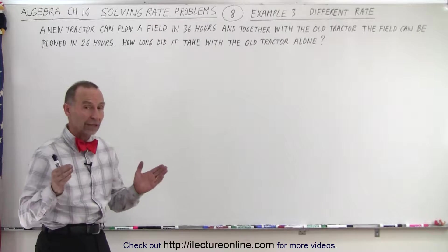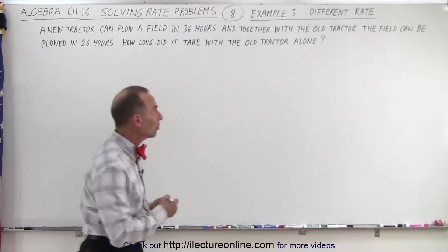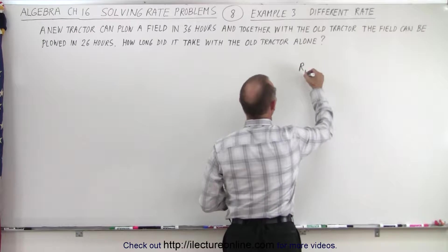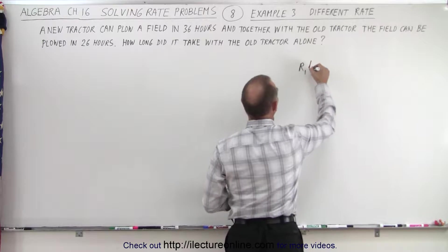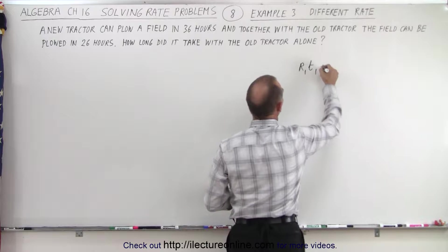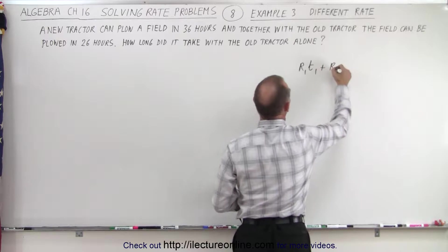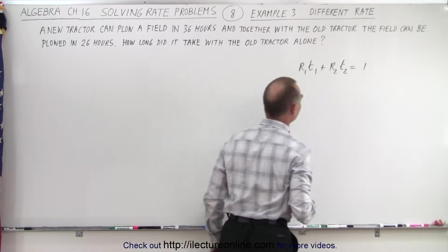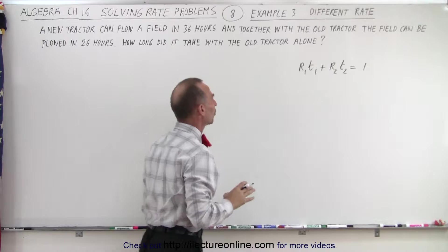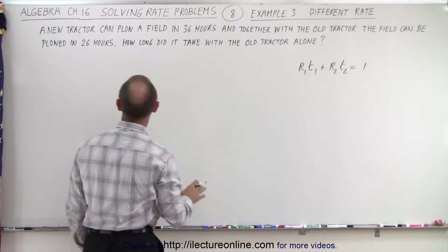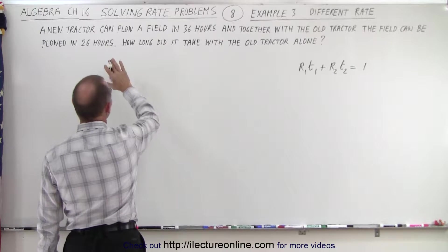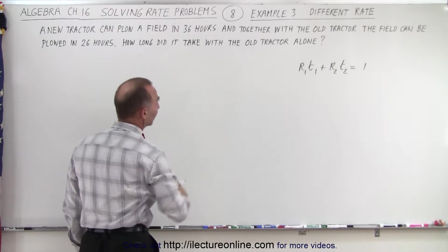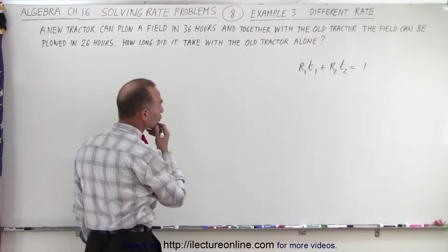We're going to write our general equation: the rate of the first times the time of the first, plus the rate of the second times the time of the second, equals the whole job done. Here, the first is the new tractor and the second is the old tractor.